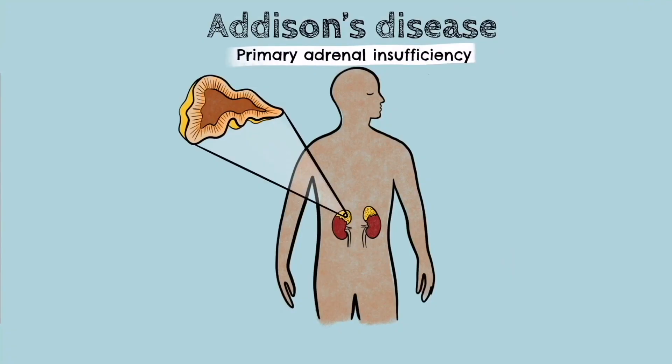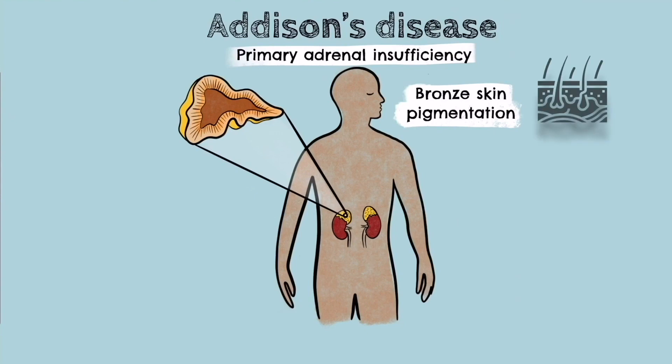Now we know what steroid hormone is produced by each part of the adrenal cortex, let's look at the clinical features that arise when it is destroyed. The pituitary gland acts in a negative feedback loop to compensate for the deficiency of steroid hormones by over-secreting ACTH. ACTH shares the same precursor molecule as melanocyte stimulating hormone, which increases in secretion leading to the characteristic bronze skin pigmentation seen in Addison's disease.